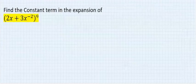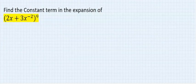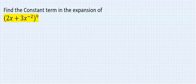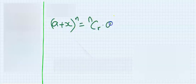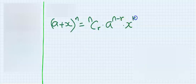Find the constant term in the expansion of this. Step 1. By the general formula, a plus x to the power of n, which is n combination r, a to the power of n minus r, x to the power of r.